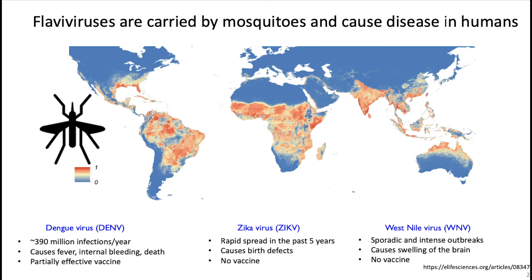In some cases, infections by these viruses are mild, but in others they can cause fever, internal bleeding, and problems in the nervous system including the brain. You probably remember the Zika outbreak, which was in the news in 2015 and 2016, where we heard about widespread infection and a concerning correlation between Zika infection during pregnancy and babies being born with microcephaly, or very small heads.